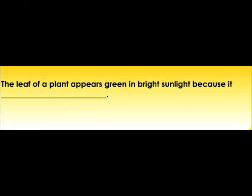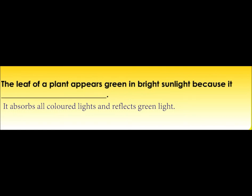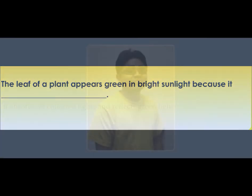The leaf of a plant appears green in bright sunlight because it absorbs all colored lights and reflects only green light. Now, the boy is wearing colored spectacles. The color of images that the boy sees will depend on the type of filter he wears. A color filter is a transparent material that enables a particular colored light to pass through it.